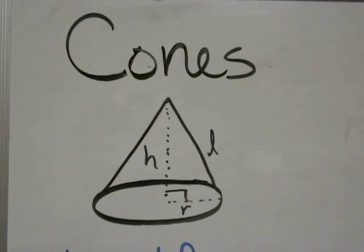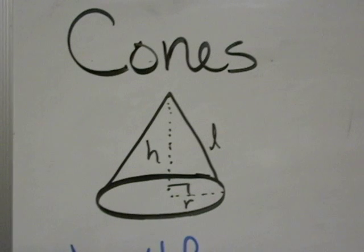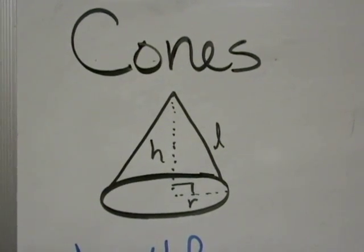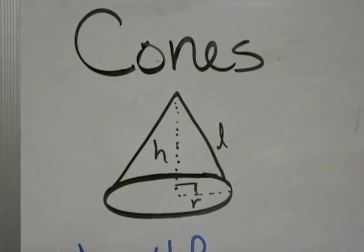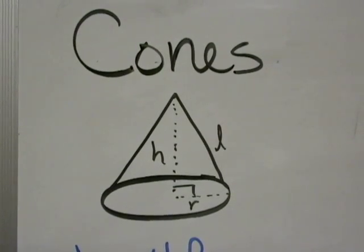And they have a piece called the slant height, which we label with the lowercase cursive L. That's the height along the side of the cone on its lateral face.